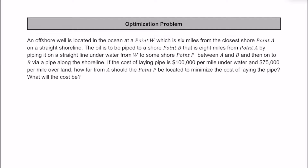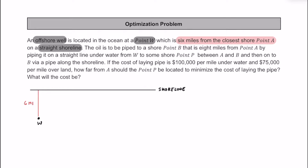Let's try an optimization problem together. We have an offshore well located in the ocean at point W, which is 6 miles from the closest shore point on a straight shoreline. This distance of 6 miles is a perpendicular line to the shoreline, making it the closest distance.